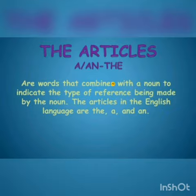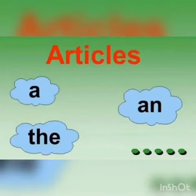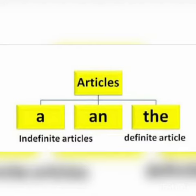There are namely three articles: 'a', 'an', and 'the', and you must be knowing about them. Now, 'a' and 'an' are known as indefinite articles, and the article 'the' is known as the definite article.